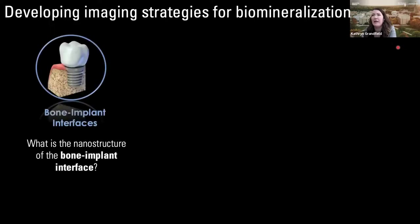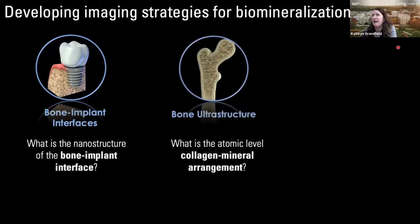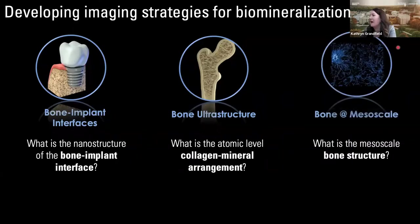The first study looks at bone-implant interfaces — specifically the nanostructure of the bone-implant interface, strategies to characterize it, and what the structure of bone actually is at the implant interface. The second topic is bone ultrastructure: the arrangement of collagen and mineral. The third topic examines bone at the mesoscale — larger length scales but still maintaining high resolution.